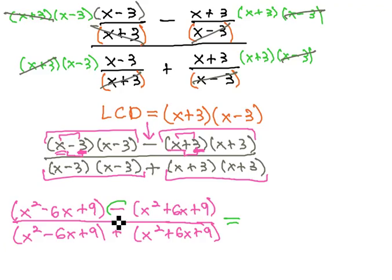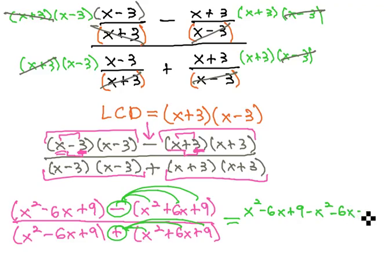Before we combine like terms, we want to make sure we distribute that negative through the parentheses. The positive won't make a difference, but the negative will make a big difference. So we have x²-6x+9 minus x²-6x-9, over x²-6x+9 plus x²+6x+9.